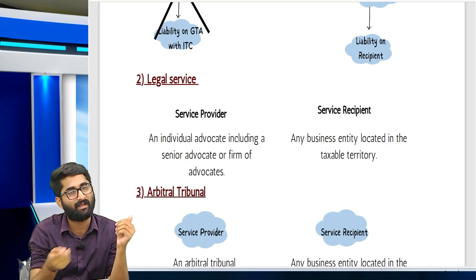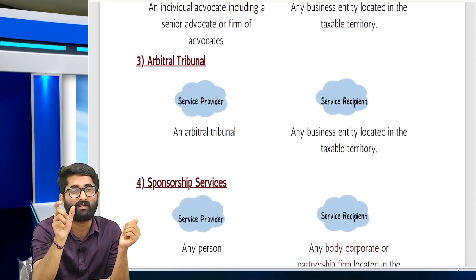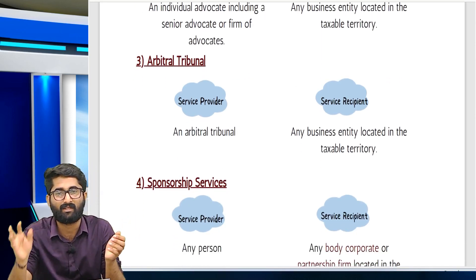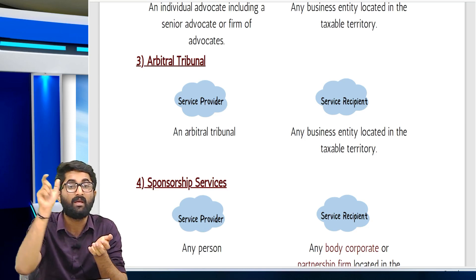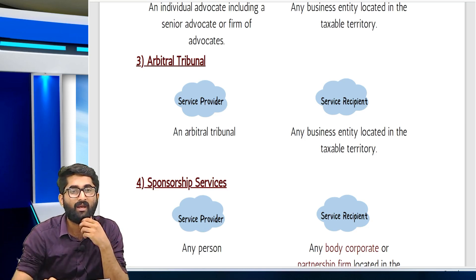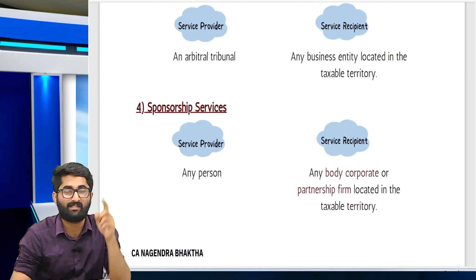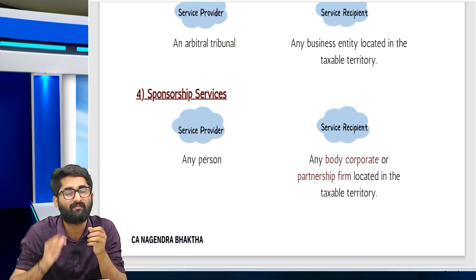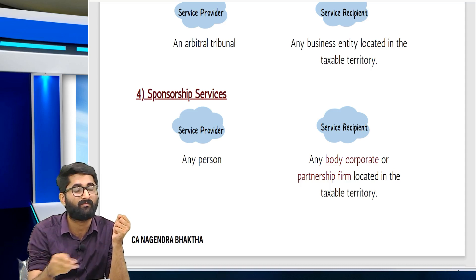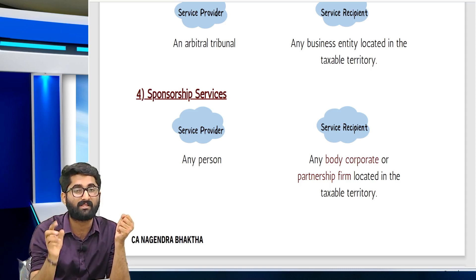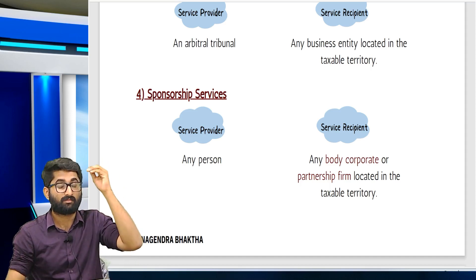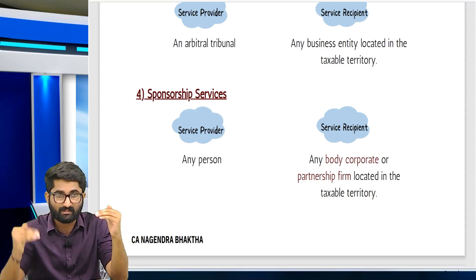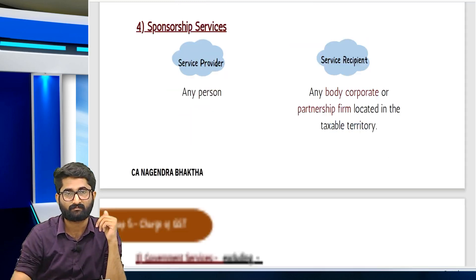Arbitral tribunal: services provided by an arbitral tribunal to a business entity located in the taxable territory — it is RCM. Big business entity: RCM; small business entity: exempt under the exemption chapter. Sponsorship services: any person giving sponsorship services to a body corporate or partnership firm — it is payable by the body corporate or partnership firm under RCM. Only body corporate or partnership firm recipients qualify.